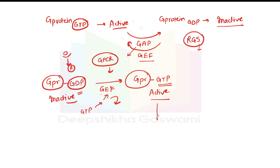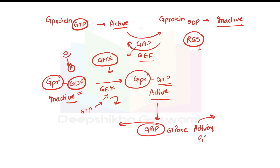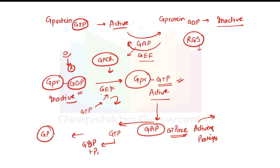When the signaling molecule is removed and the signaling process is finished, GAP facilitates GTP hydrolysis — meaning GTP is converted into GDP. This is called hydrolysis. As a result, G protein becomes attached to GDP and is converted into the inactive form.